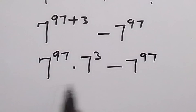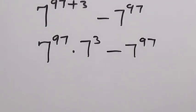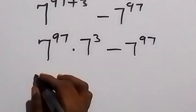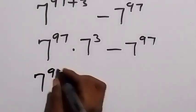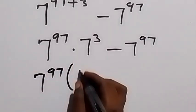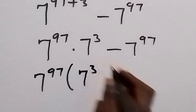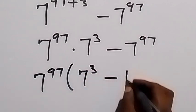Then we have 7 raised to power 97 common here, so we can factor that out and this will be 7 raised to power 97 then into bracket, 7 raised to power 3 left here, then minus 1 left here.